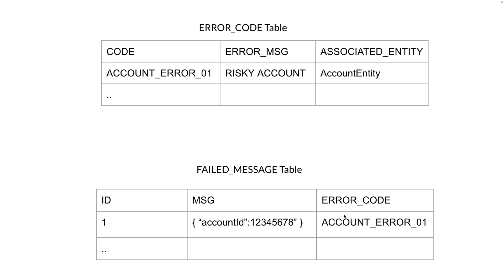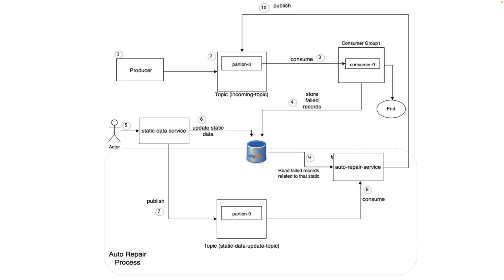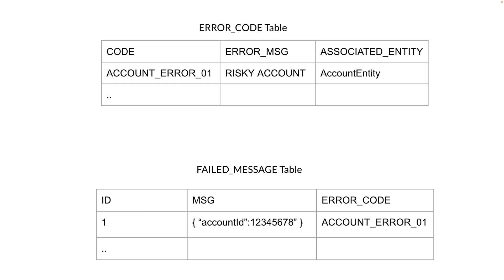Once we have this error code, we fetch all failed messages associated with that error code. The auto repair process knows this message is related to accounts, fetches all error codes for that account entity, then gets all failed messages associated with those error codes. The main consumer, when publishing to the database during failure, must store the error reason so that's how we identify which failed messages to reprocess. This is not a perfect solution for a real-world scenario, but it will serve the purpose for the demo of auto repair processing.